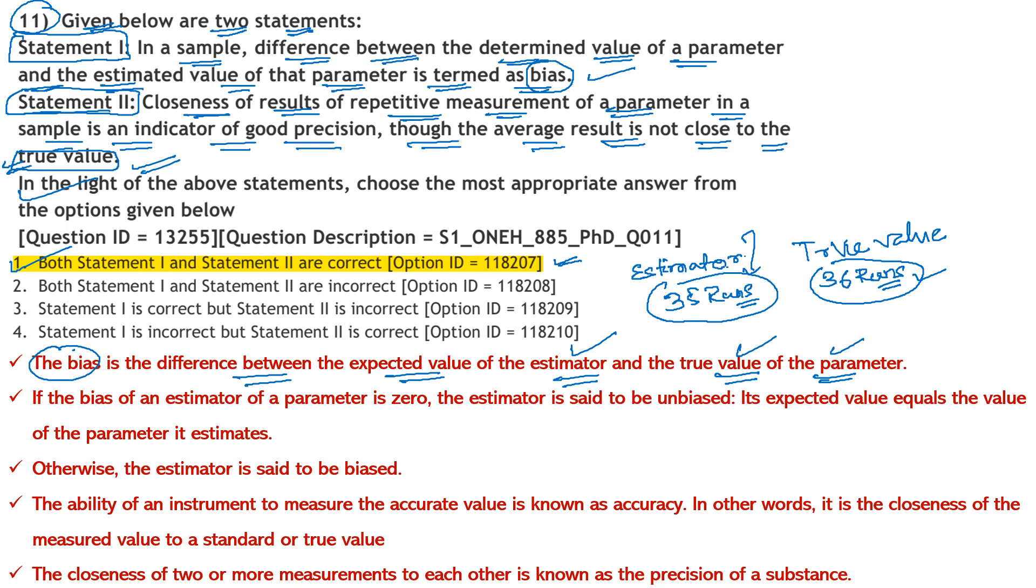If the bias of an estimator of a parameter is zero, the estimator is said to be unbiased. For example, if the expected value from the estimator is 36 and the parameter is also 36, then the difference between both values will be zero.